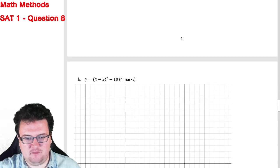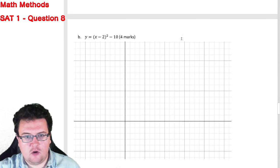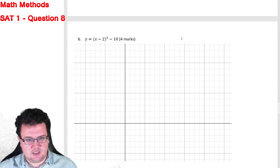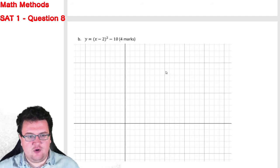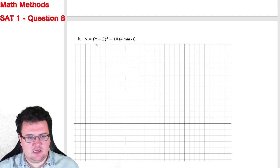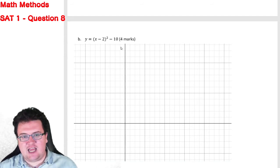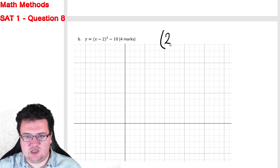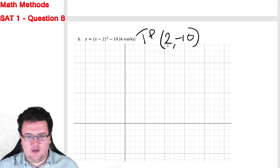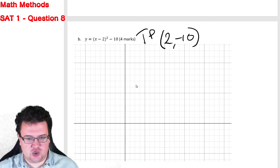So for 8b, however, we are presented with a different set of circumstances. What we have here is a graph that is in turning point form. And looking at the equation, because it is x minus h squared plus minus k, we know that our turning point is going to be at 2, negative 10. So the turning point is at 2, negative 10, the axis of symmetry is going to be at 2.